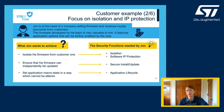In our second example, we look at IP protection and isolation. John is at the head of a company selling firmware and receives royalty payments from his customers. The firmware developed by his team is very valuable, and it features application options that can further be enabled by the user. To secure his business, John needs to isolate and protect his firmware, ensure he can securely update it independently, and set unchangeable application states to protect the enabled options.